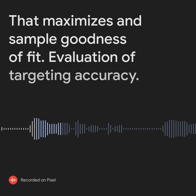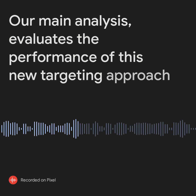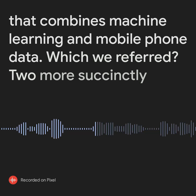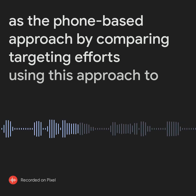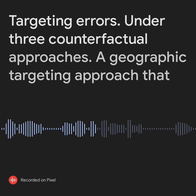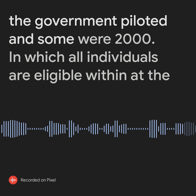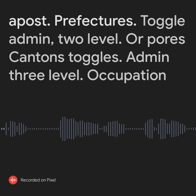Our main analysis evaluates the performance of this new targeting approach that combines machine learning and mobile phone data, which we refer to more succinctly as the phone-based approach, by comparing targeting efforts using this approach to targeting errors under three counterfactual approaches. The first is a geographic targeting approach that the government piloted in summer 2020, in which all individuals are eligible within the poorest prefectures.